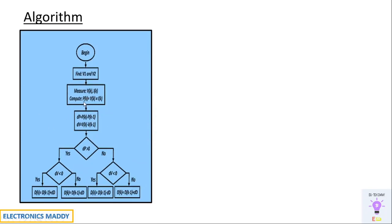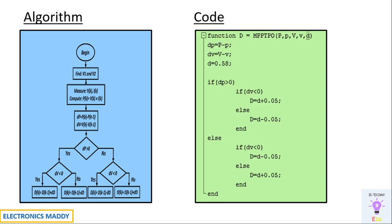We compute dP = P(k) - P(k-1), where P(k) is the instantaneous value and P(k-1) is the previous value. We also find dV. If dP is greater than zero, it goes to one block; if not, it goes to another block — increasing or decreasing the duty ratio accordingly. This is the core of the algorithm.